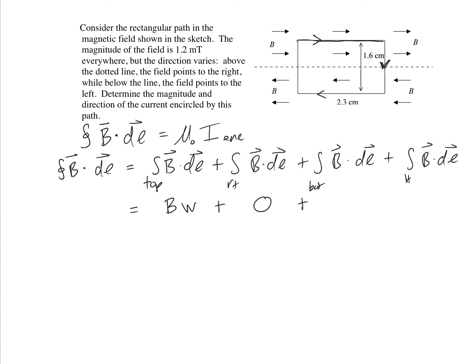Now for the bottom, again, we have a uniform magnetic field, and as we move along our path, we're parallel to the magnetic field, so we get B w. And for the left-hand side, we get zero. So this, in total, is equal to 2 times B w.